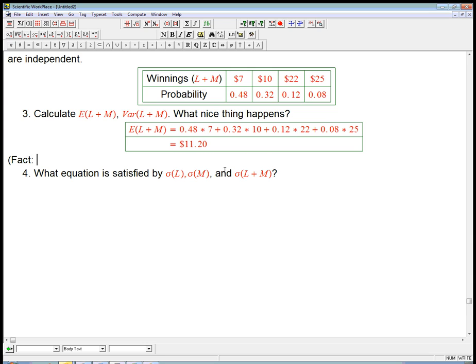The fact is that this works even if L and M are not independent. But that's only for the expected value. And for the variance, it turns out to be crucial. We're going to see something nice, similar come out of the variance, but it's crucial that they're independent in that case.